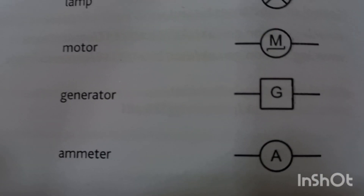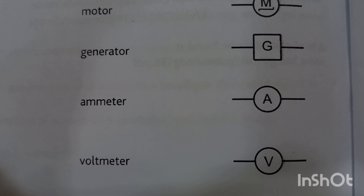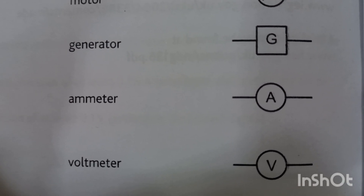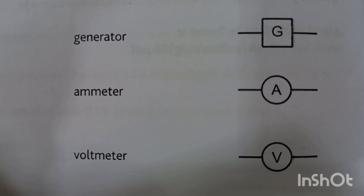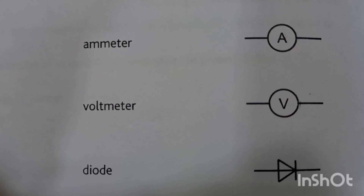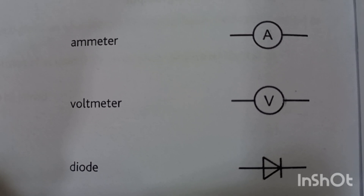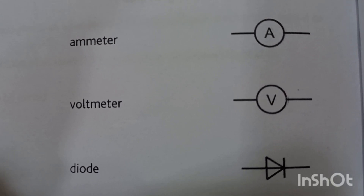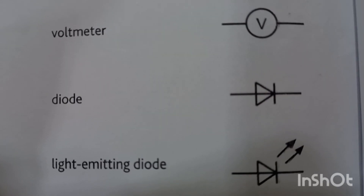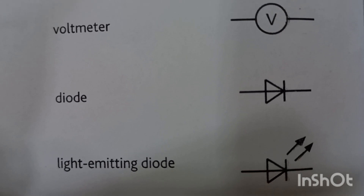This symbol is for the motor. This is the symbol for the generator — a device used to induce electricity, where mechanical energy is converted into electrical energy. Here we have the ammeter, a device which measures the amount of current in a circuit or flowing through an electric component. The voltmeter is a device used to measure the voltage drop across a component.